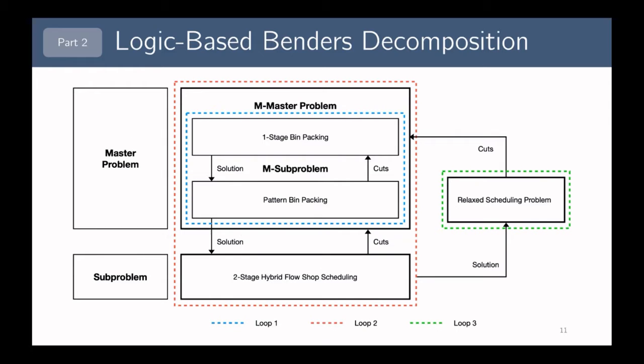The second LBBD model is mostly the same as the first, with the exception of a second set of cuts added after each time we solve the sub-problem. After each sub-problem solve, we solve a relaxation called the relaxed scheduling problem. If we can solve this relaxation to optimality, that gives us a lower bound, and we can add these lower bounds as cuts back into the master problem to cut off larger sections of the search space.